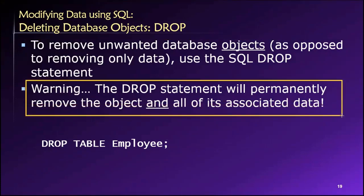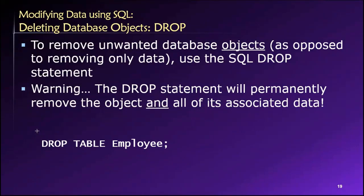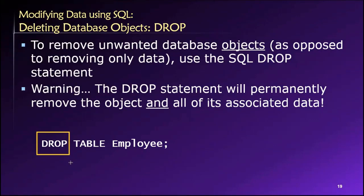This will permanently remove the object and all of its associated data. So if we're dropping a table, all of the data will be lost forever, as will the table itself. Remember: delete operates on data, but drop operates on database objects like tables, views, relationships, or other types of constraints.